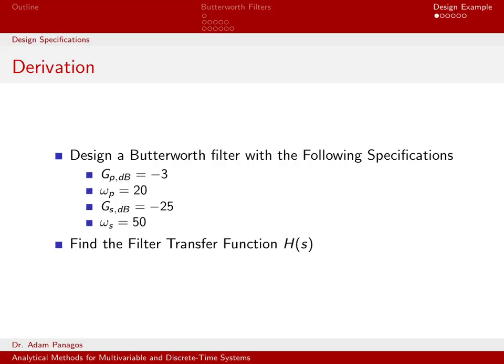So we are going to design a Butterworth filter that has these specifications. It has a passband frequency of 20, and the gain at that frequency is minus 3 dB. It has a stopband frequency of 50, and the gain at that frequency is minus 25 dB. We are going to find the filter transfer function H(s) that has these characteristics.